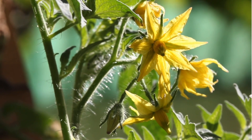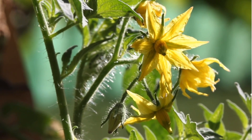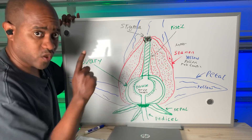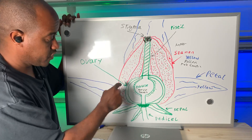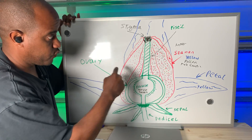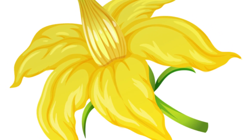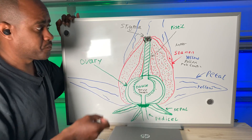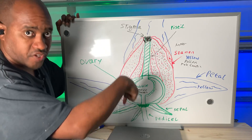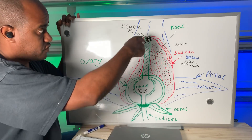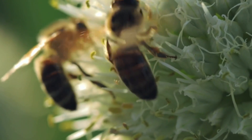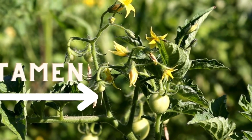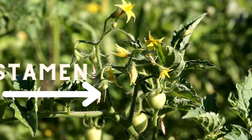If you look at a tomato flower on a tomato plant you will notice that it's yellow and green. When you look at the yellow part of a flower you'll see the petals and then you will see this part here which is called the stamen. The stamen is the part of the tomato that contains the male genetic code, or the pollen. When bees come by or when the wind blows and moves the flowers around, the pollen that's inside of the stamen will start to fall out.